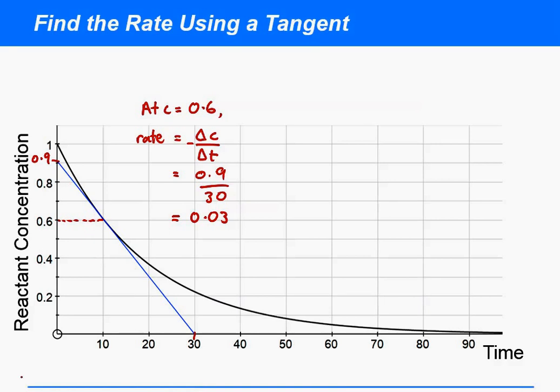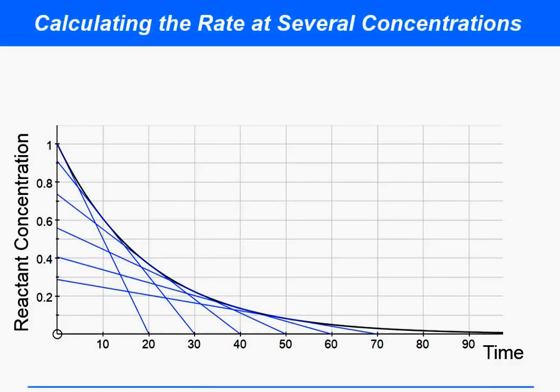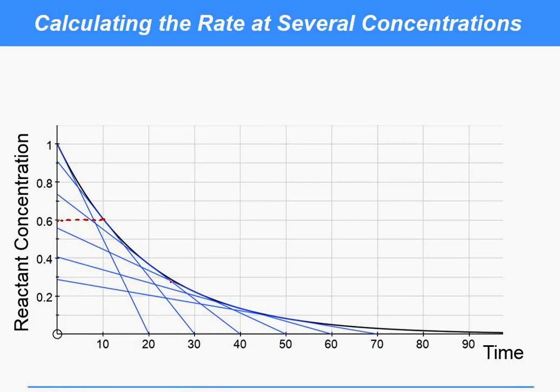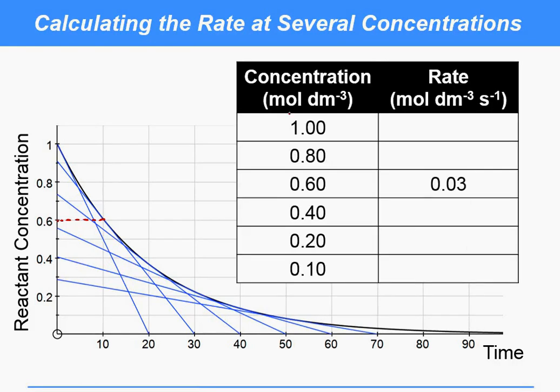So that's how you do it with just one tangent, but what we need to do is build up many tangents drawn to the graph at different concentrations. So this tangent here drawn at 0.6, there are other tangents drawn at different concentrations and we can make up a little table. So we can have concentration, that is where the tangent touches the curve, and the rate of reaction at that point, and we can calculate the gradient of those tangents and fill in concentration and rate here.